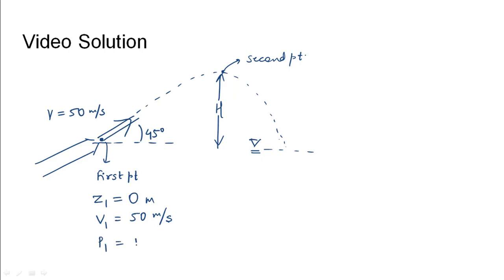Speed is given as 50 meters per second and pressure will be equal to the atmospheric pressure. For the second point, the elevation head will be nothing but the height that the water has reached. Speed will be the initial speed, that is v into cos 45, since for a projectile at the maximum height all the vertical velocity is lost and only horizontal velocity remains.